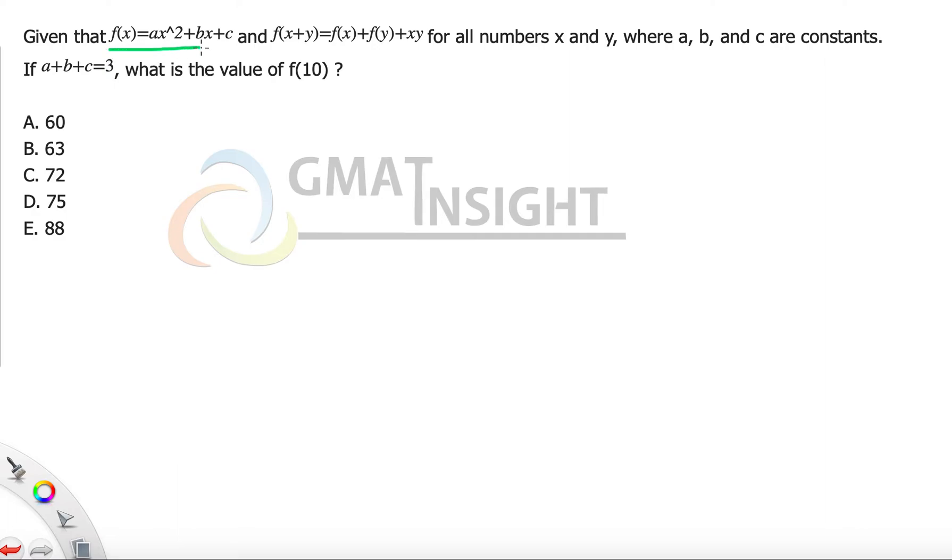So we have a function defined by the quadratic equation f(x) = ax² + bx + c. And there is a function that defines f(x+y) = f(x) + f(y) + xy for all numbers x and y, where a, b, c are constants.